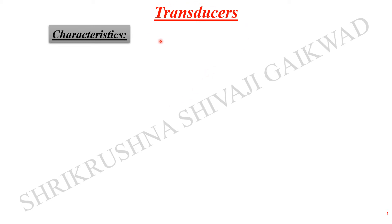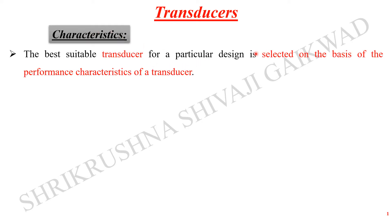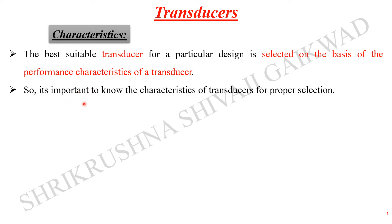In continuation with the last lecture, we are going to talk about the characteristics of the transducer. There are two types of characteristics of the transducer. The best suitable transducer for a particular design is selected on the basis of the performance characteristics of the transducer, meaning what kind of measurement we are going to do. The characteristics of that transducer are also important while selecting a particular transducer for an application.